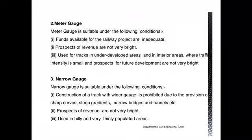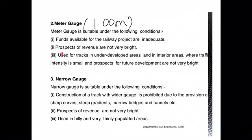The meter gauge has a width of 1.00 meter, which is narrower than the broad gauge. It is suitable when the funds for railway projects are insufficient or inadequate, and in areas where prospective revenues are not very bright — especially in underdeveloped or interior areas where traffic is small and future development is not expected to be significant.